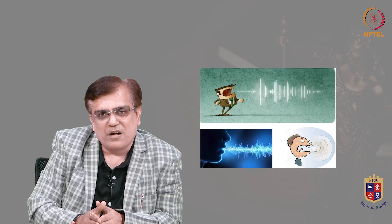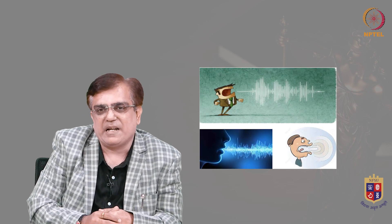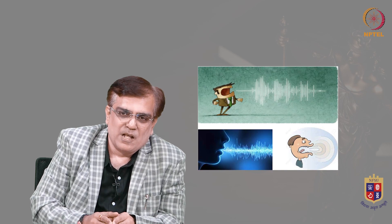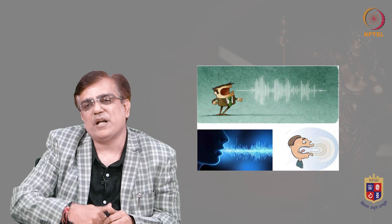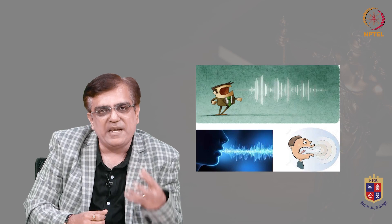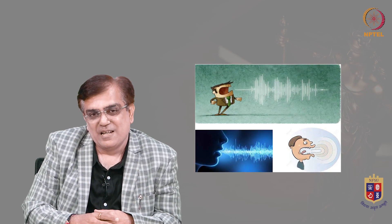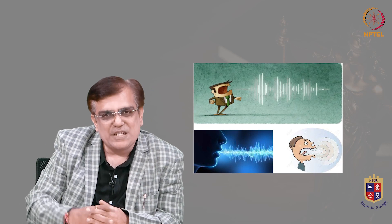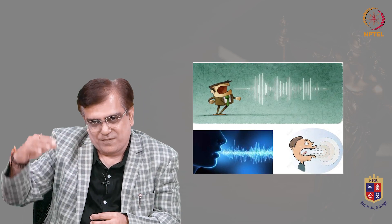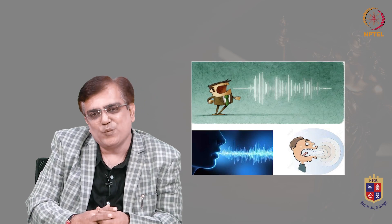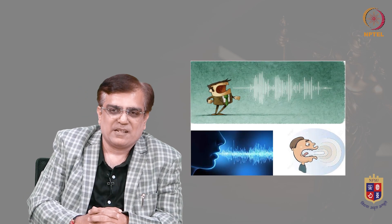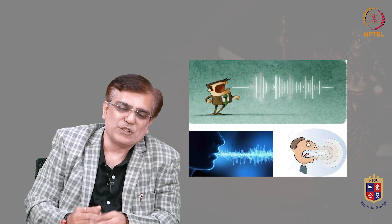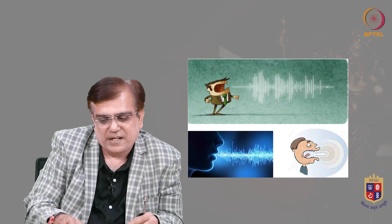If we go deeper into the sub-areas of phonetics, we can divide it into three parts. The first is articulatory phonetics — how sounds are made. The second is acoustic phonetics — it talks about sounds as waves. And the third is auditory phonetics — how we hear sounds. So, there are three different areas of phonetics.